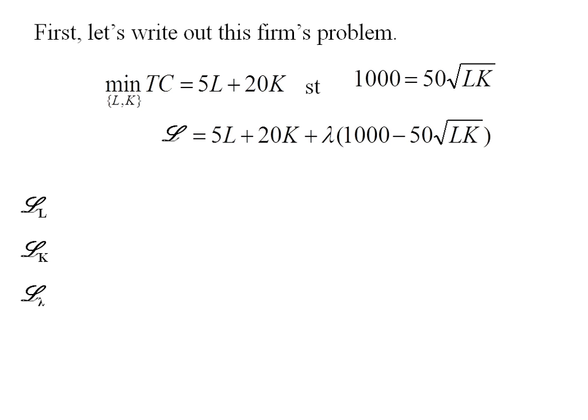And looking at that production function, notice that it's got the square root of L times K. Remember, I could rewrite that as fifty times L to the point five, K to the point five. So when I take the partial derivative with respect to L, I get five minus lambda times fifty times point five times L to the negative point five times K to the point five.